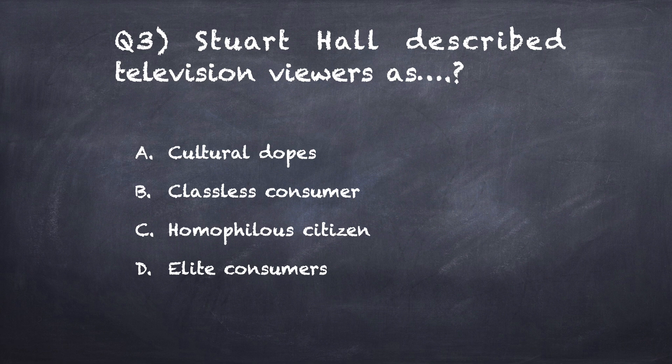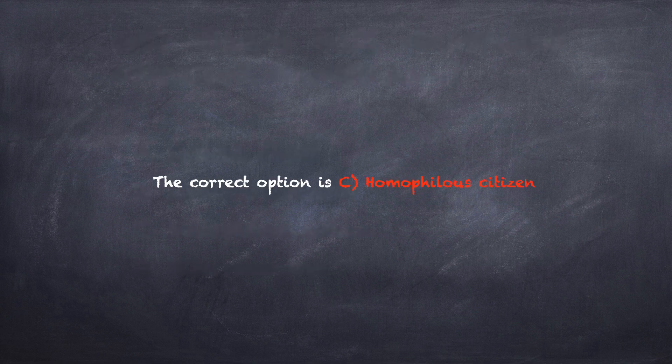Question number three: Stuart Hall described television viewers as? Option A: cultural dopes. Option B: classless consumer. Option C: homophilous citizen. Option D: elite consumers. The correct option is C, homophilous citizen.